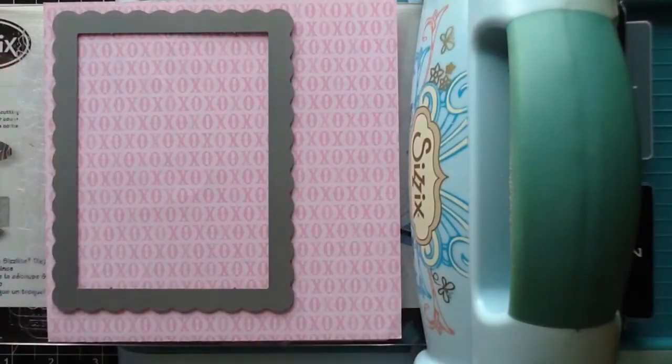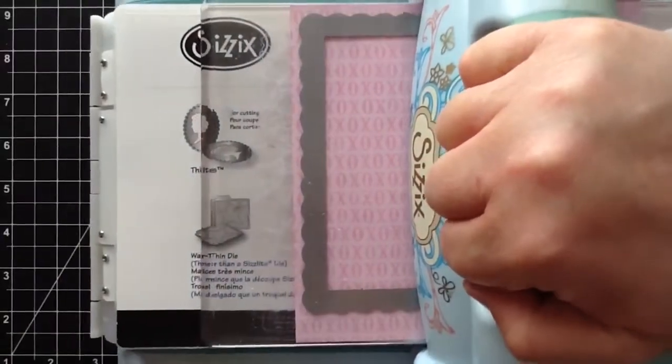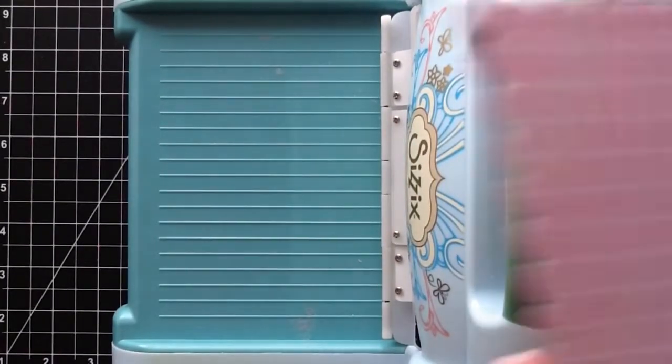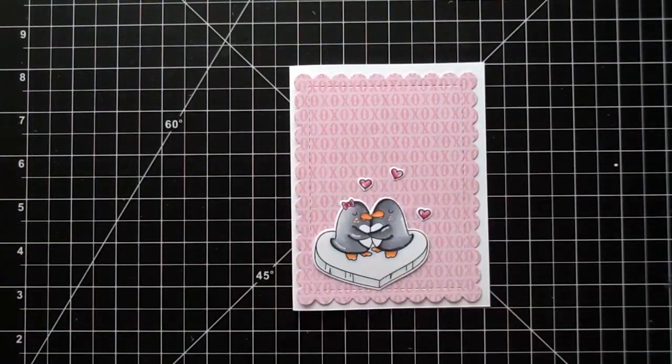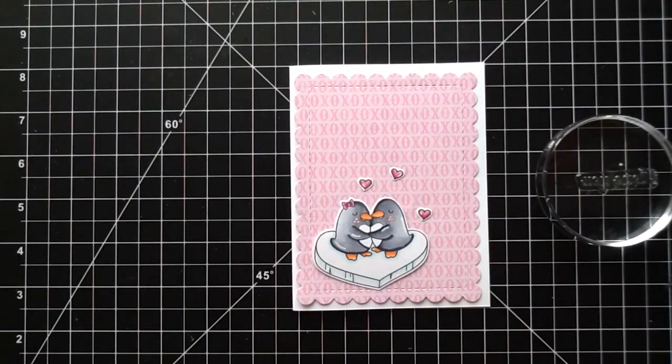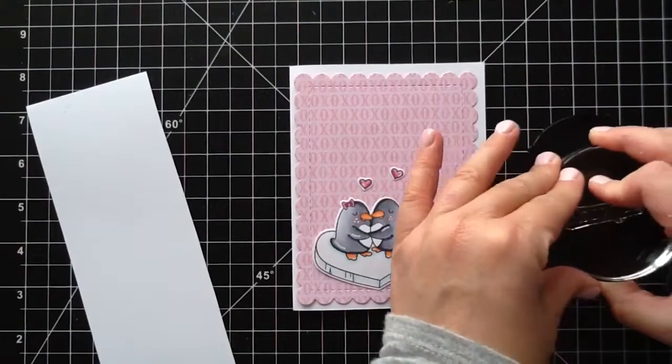After I do that, I'm taking this scalloped rectangle die and this really cute XOXO paper I had in my stash from Doodlebug. I'm running it through and I have all my pieces ready for my card. I'm going to stamp on my sentiment here. I'm using the one that says I love you. And because that background paper is so nice and light colored, I can just stamp right on top of it.